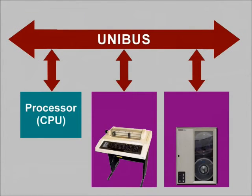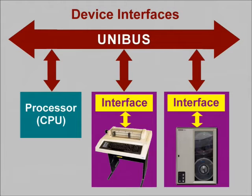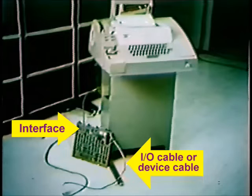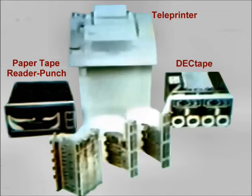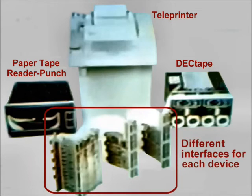Each device requires an interface. This interface connects to the unibus and handles all communications between the device and the other elements in the system. In other words, the interface converts information transmitted on the bus into data and control signals that the device can respond to. This is a typical I/O device and its corresponding interface. The cable that you see is called an I/O cable or a device cable because it connects this input-output device to its interface. Each device requires its own set of control signals to function properly. Consequently, the interfaces for these three devices are also different.